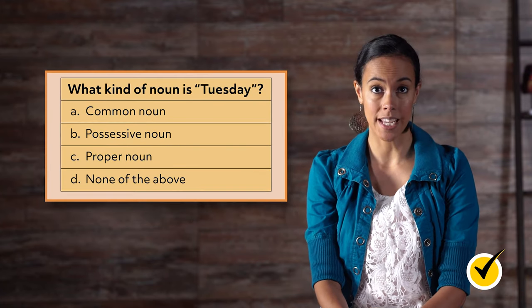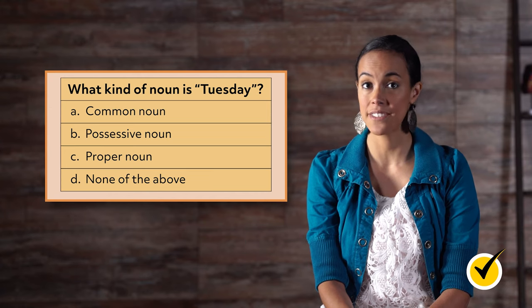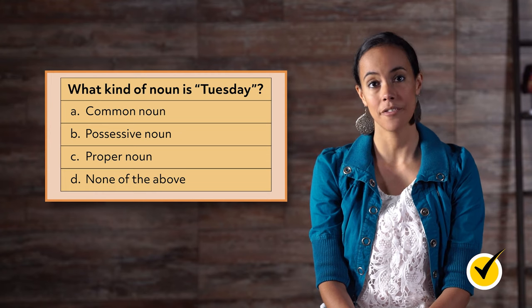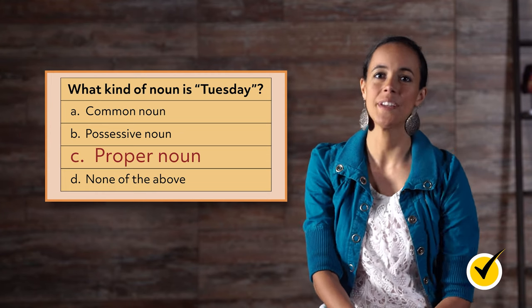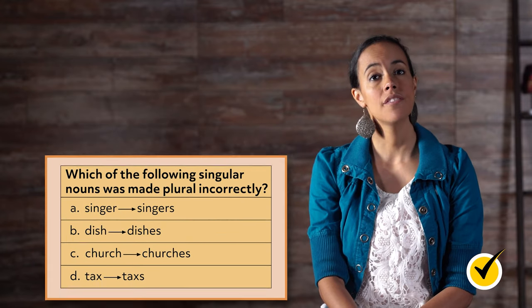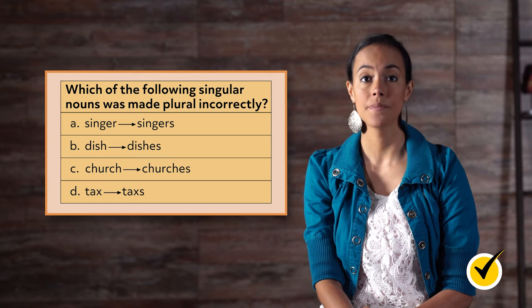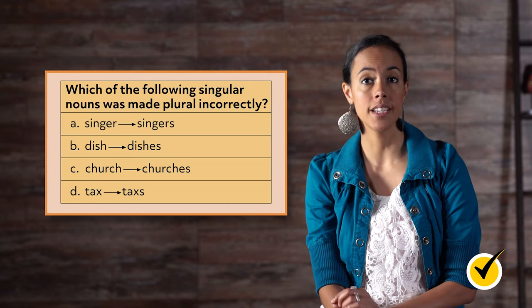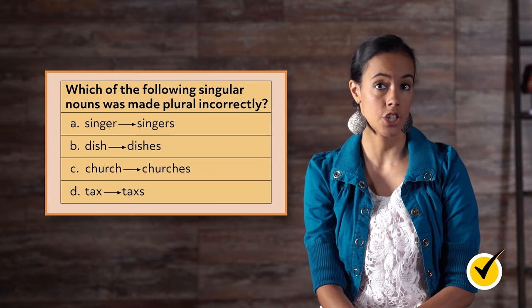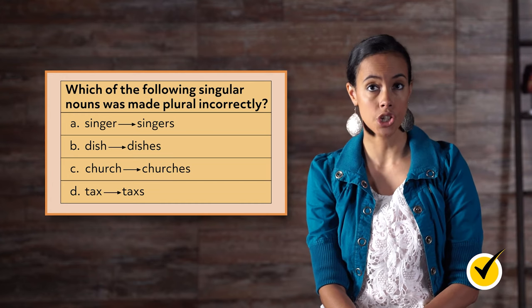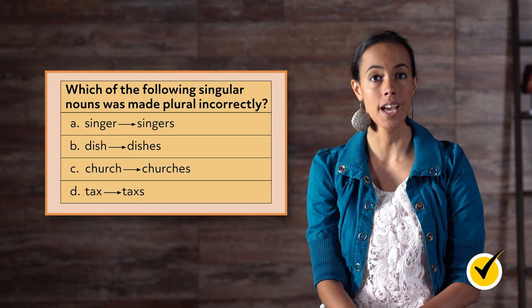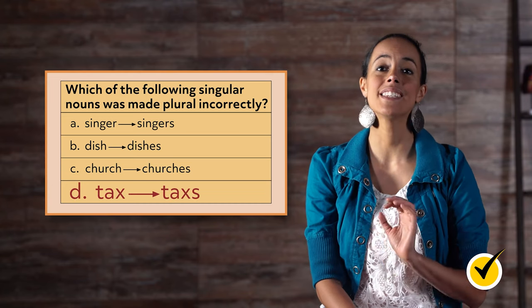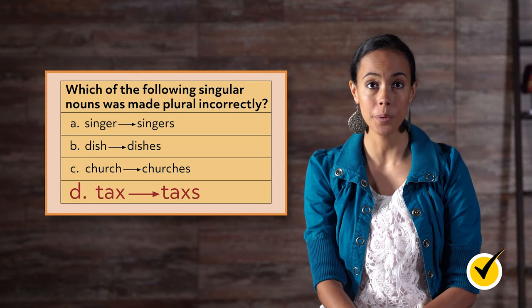Nouns and pronouns are essential pieces needed to complete sentences. Let's do a few practice examples. What kind of noun is Tuesday? The answer is C, proper noun, because it's the name of a specific day. Which of the following singular nouns was made plural incorrectly? A, singer to singers. B, dish to dishes. C, church to churches. Or D, tax to taxes. The answer is D, because nouns that end in X take an ES to make them plural.